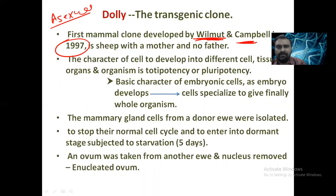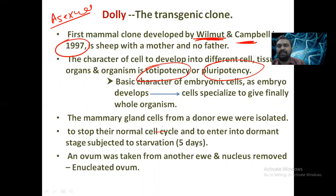Key to this process are totipotent and pluripotent stem cells, which can differentiate into tissue, organs, or ultimately an entire organism.